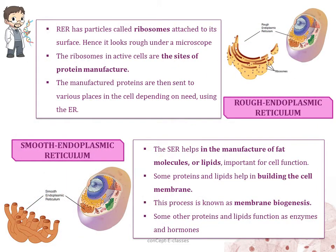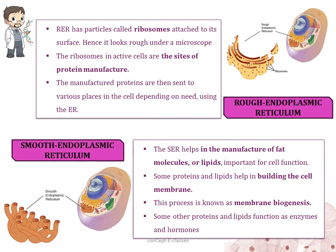The rough endoplasmic reticulum has particles called ribosomes attached to its surface, hence it looks rough under the microscope. In active cells, ribosomes are the sites of protein manufacture. The manufactured proteins are then sent to various places in the cell depending on need using the endoplasmic reticulum. So the RER mainly helps in the synthesis and transportation of proteins. The smooth endoplasmic reticulum helps in the manufacture of fat molecules or lipids, which are very important for cell function. Some of these proteins and lipids help in building the cell membrane — this process is called membrane biogenesis.